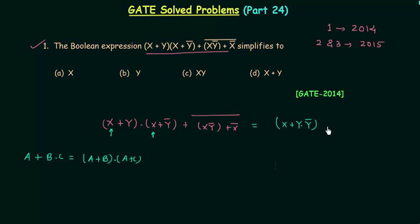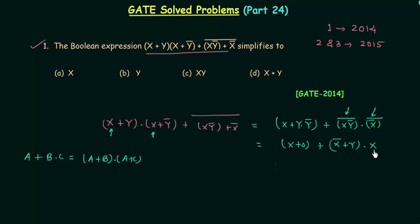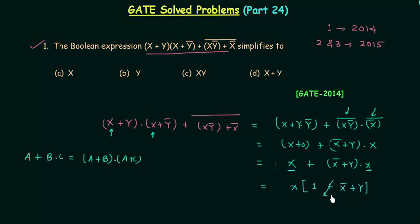Now I will apply De Morgan's law. By De Morgan's law, (y AND y complement) — note that y AND y complement equals 0. So we have x OR 0. I will again use De Morgan's law and the complement law: x complement OR y AND x, because the complement of x complement is x. Now we have x OR (x complement OR y) AND x. Since x is common, I take x out: x AND (1 OR x complement OR y). Since 1 OR anything equals 1, this simplifies to x AND 1, which equals x.